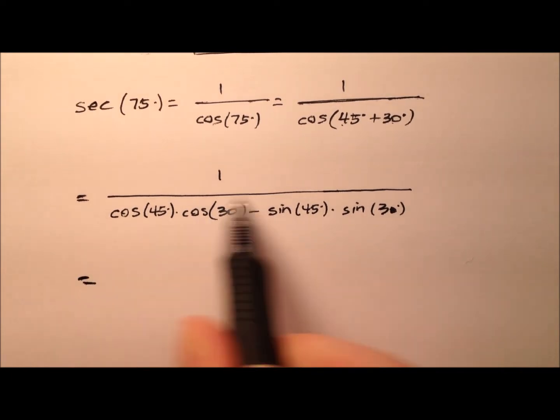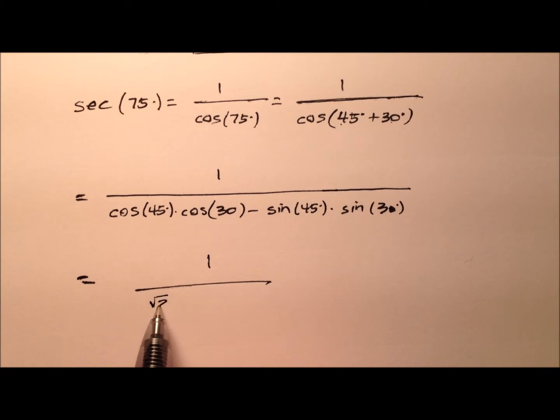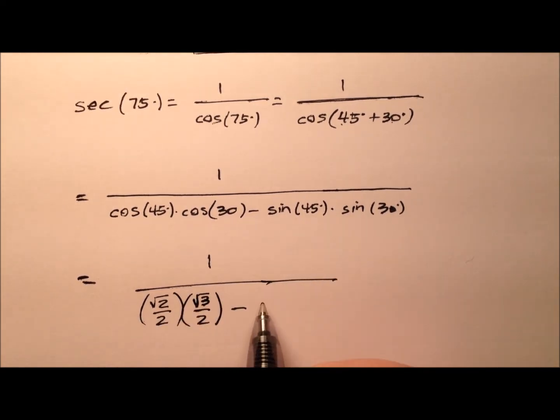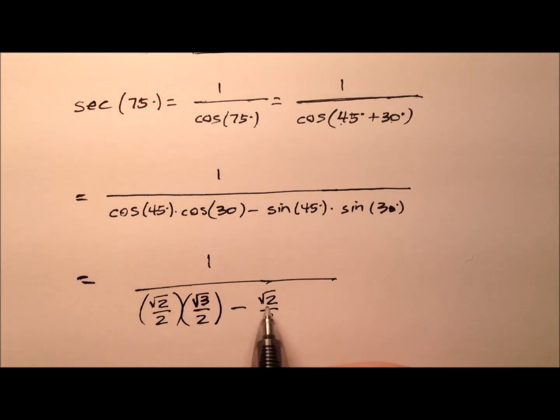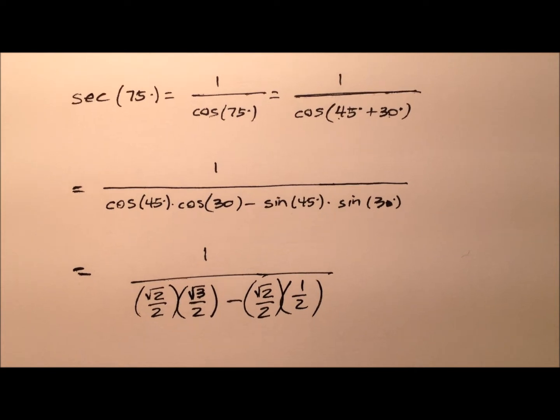That's nice, because we know all these values. So cosine of 45 is the square root of 2 over 2. The cosine of 30 is the square root of 3 over 2. From that, we're going to subtract the sine of 45, which is also the square root of 2 over 2, and the sine of 30, which is 1 half.